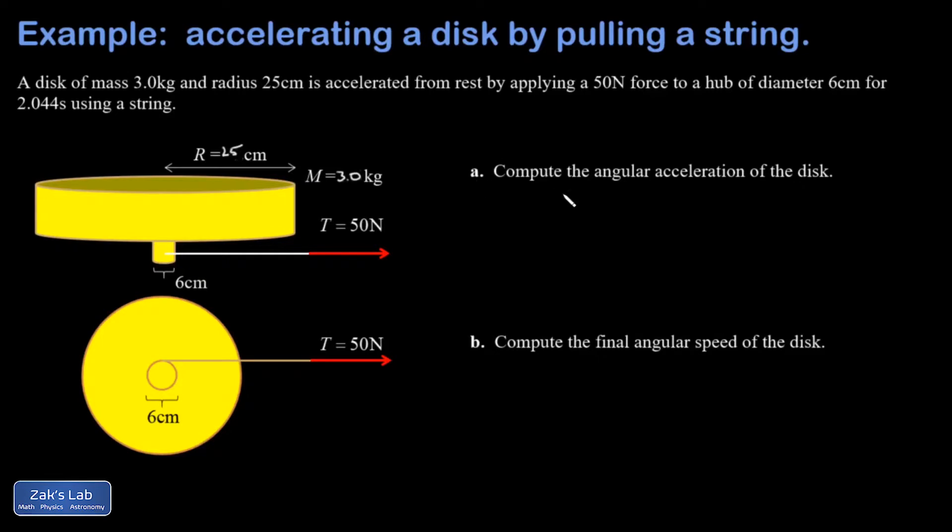My first question is to get the angular acceleration. So the idea here is that I'm using the rotational version of Newton's second law: torque equals I alpha. And what I'm solving for is alpha. That's going to be the torque divided by the moment of inertia.